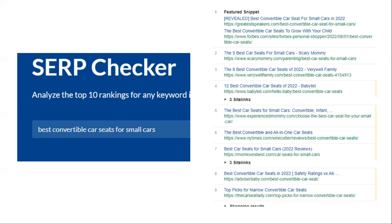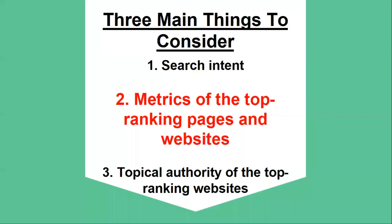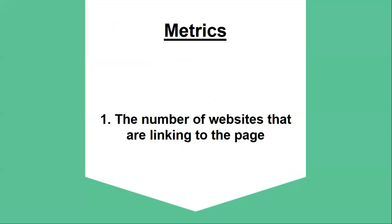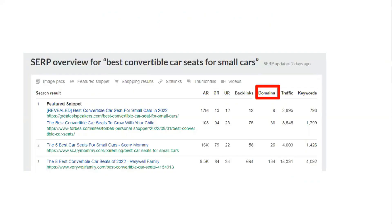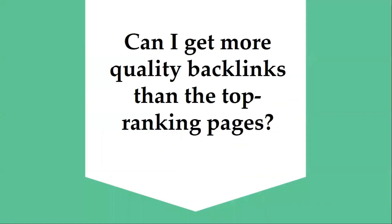I don't want you to take this advice to mean that you must include the exact keyword phrase in your titles. But with this example, finding convertible car seats for small cars is actually a very specific need for a specific person. Now let's talk about the second main thing to consider, which is the metrics of the top ranking pages and websites. The first metric to look at is the number of websites that are linking to the page, which we call referring domains. As I mentioned in module one, backlinks are one of Google's most prominent ranking signals, so if a page has a lot of quality links pointing at it, it will be more competitive to rank. The question to ask yourself is: can I get more quality backlinks than the top ranking pages?